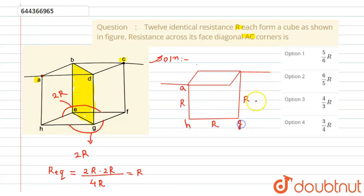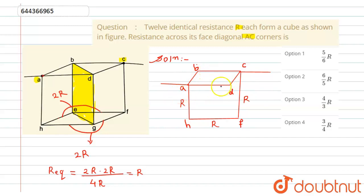After this reduction, we can see that two more resistances are in series, and combining them gives us three branches that will come in parallel with each other. We can now draw the final equivalent circuit.